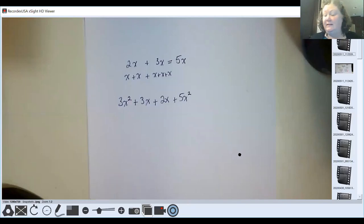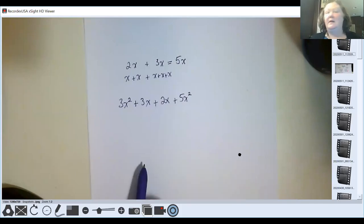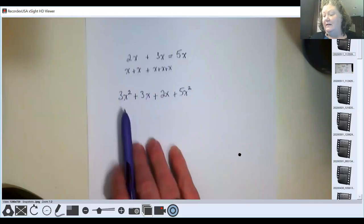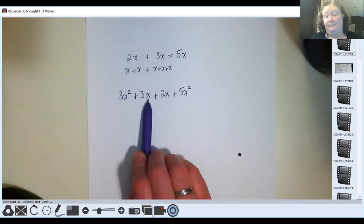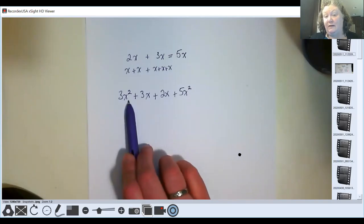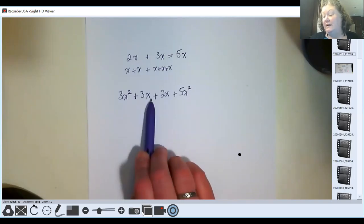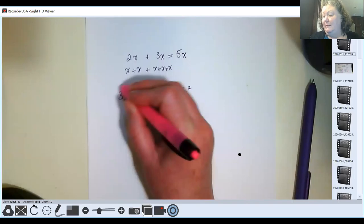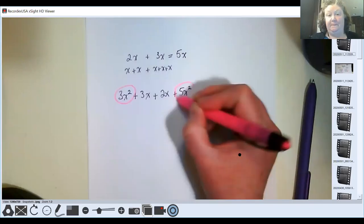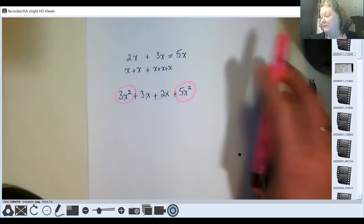Now when people are first learning this and they look at this, they think, well, they all have X's so I can just put them all together. But they're not the same kind of X. This is an X raised to the second power, and this is just an X. It doesn't matter that they both have a three in front. What matters is that the X here has a square on it and this is just a regular X. So if I was combining like terms here, this one matches this one because they both have an X raised to the second power.